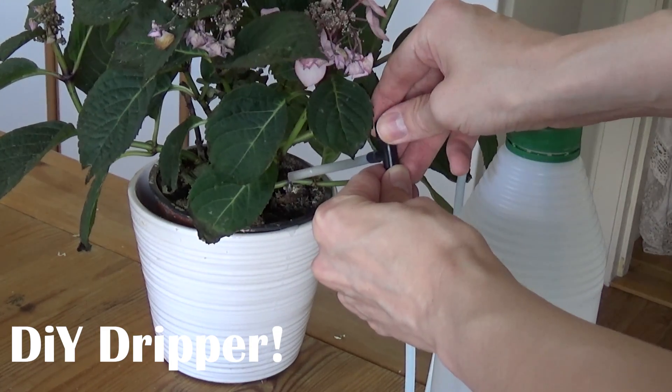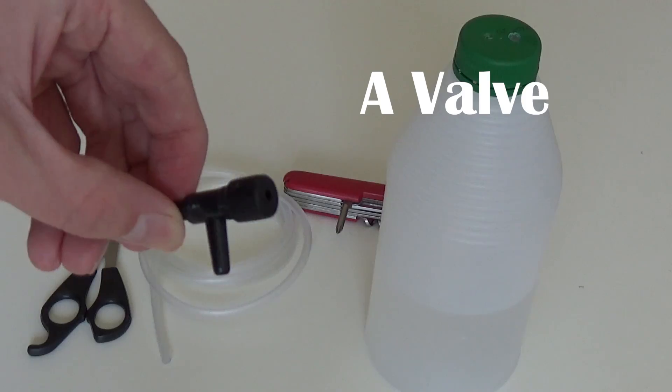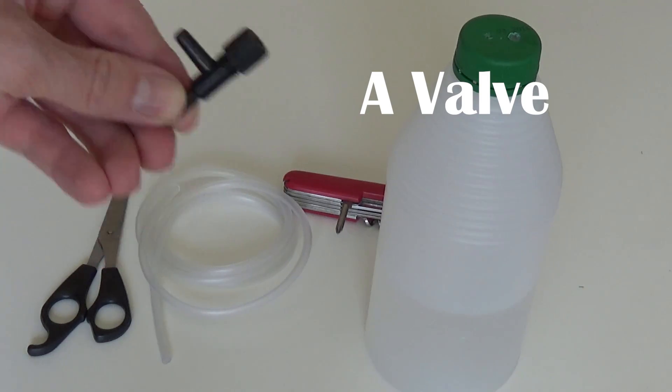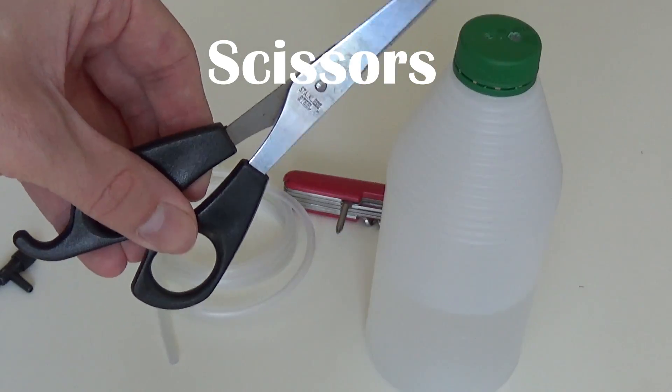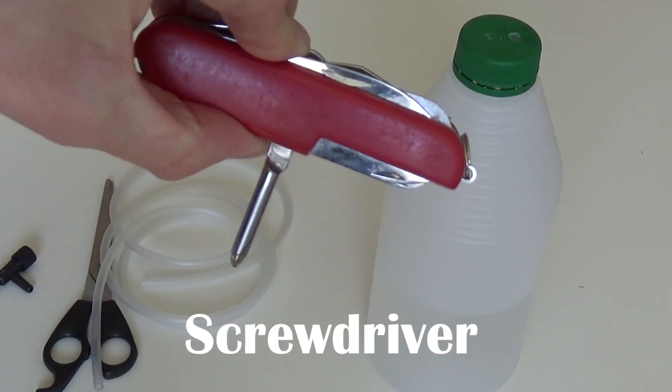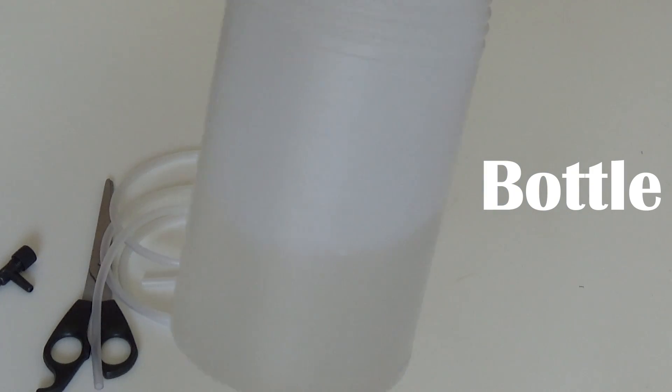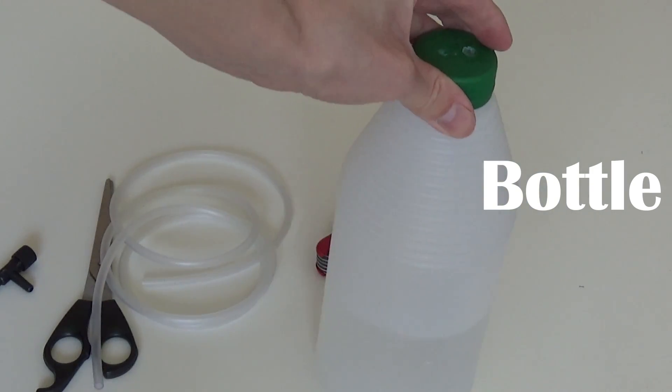A dripper takes 5 minutes to make and it's very easy to do. All you need is a valve, a pair of scissors, a silicone tube, a screwdriver, and a bottle. You can choose the size of the bottle depending on how long you want it to last.